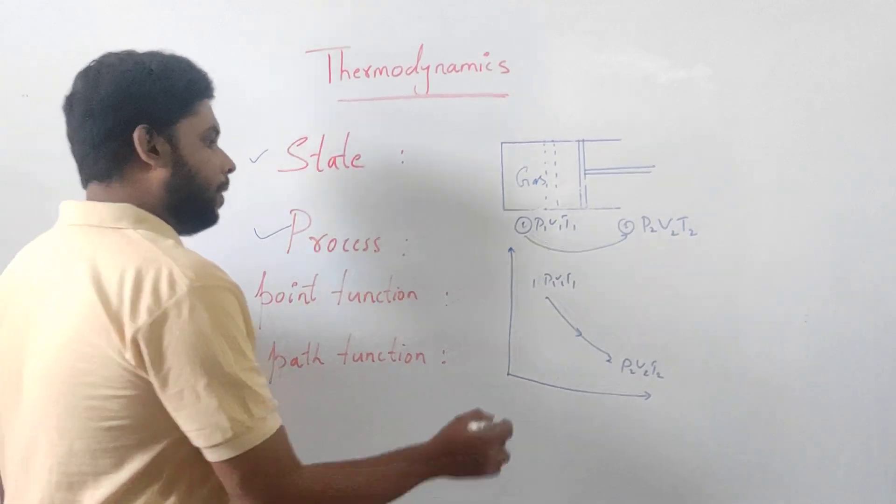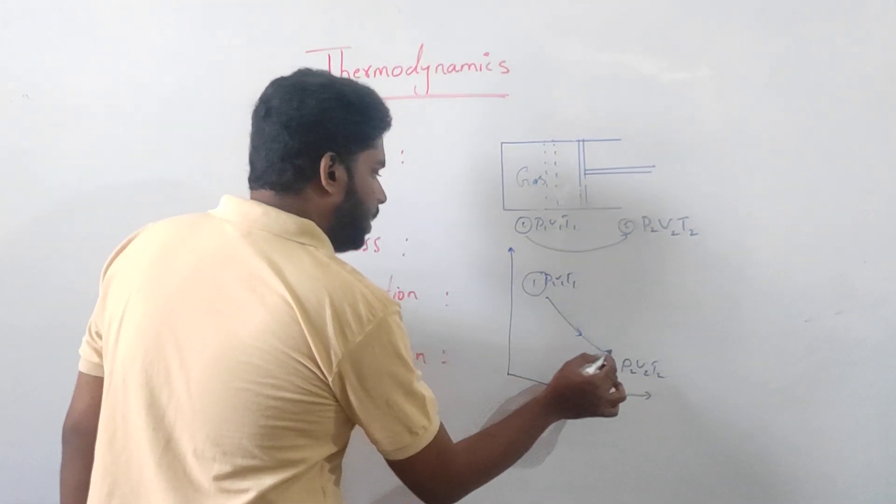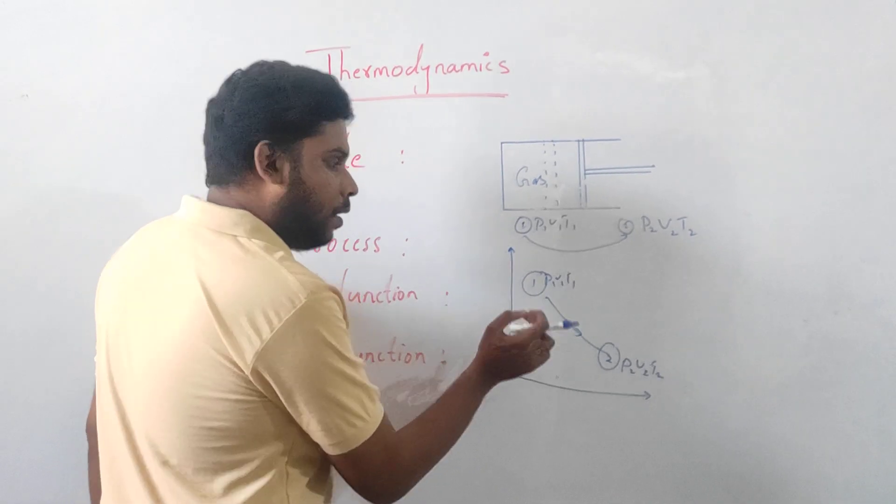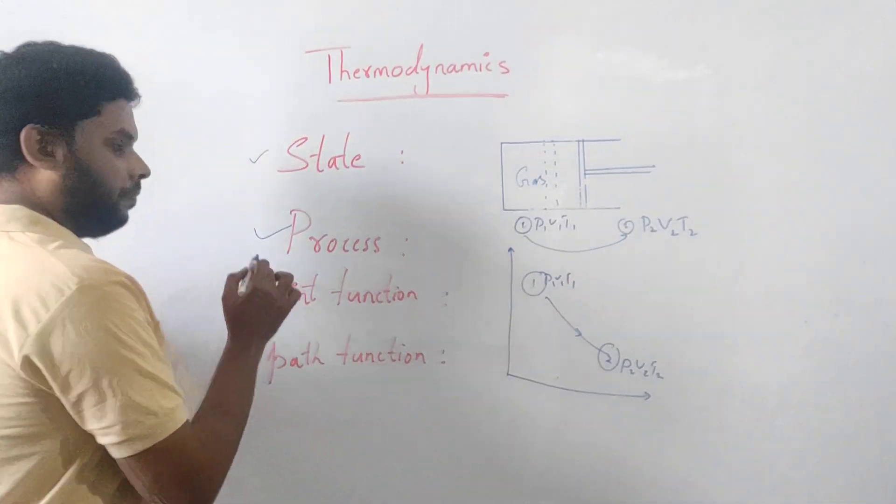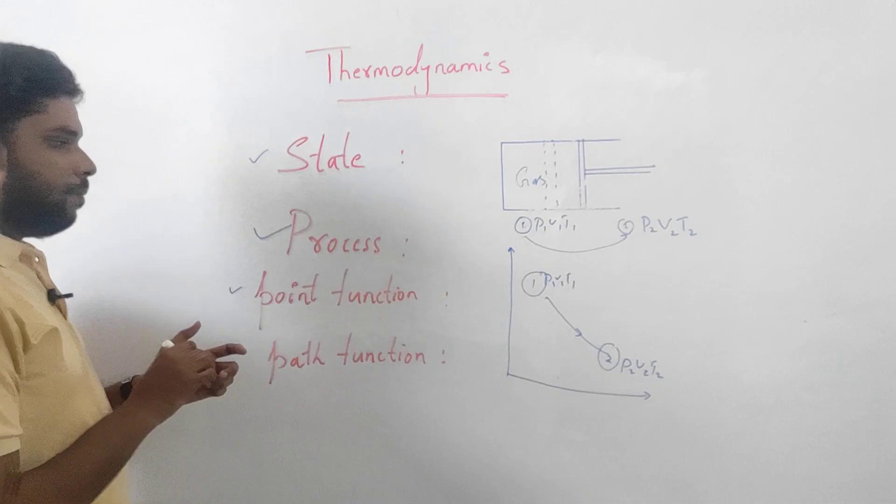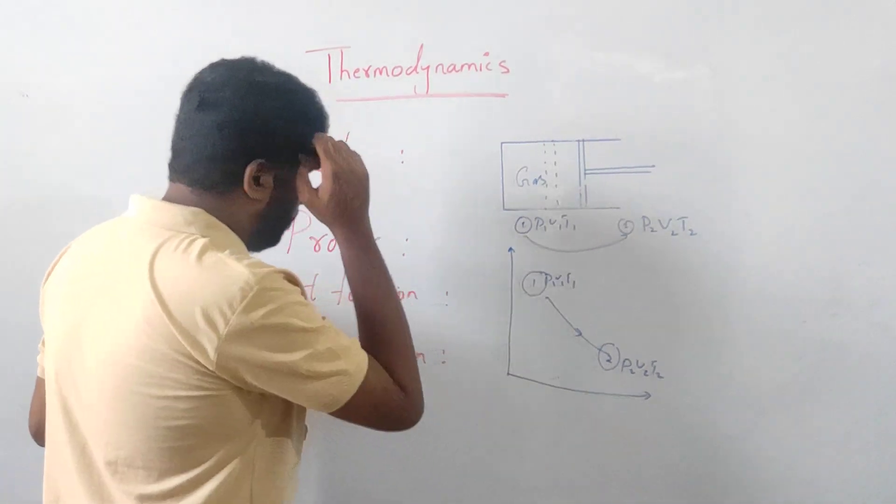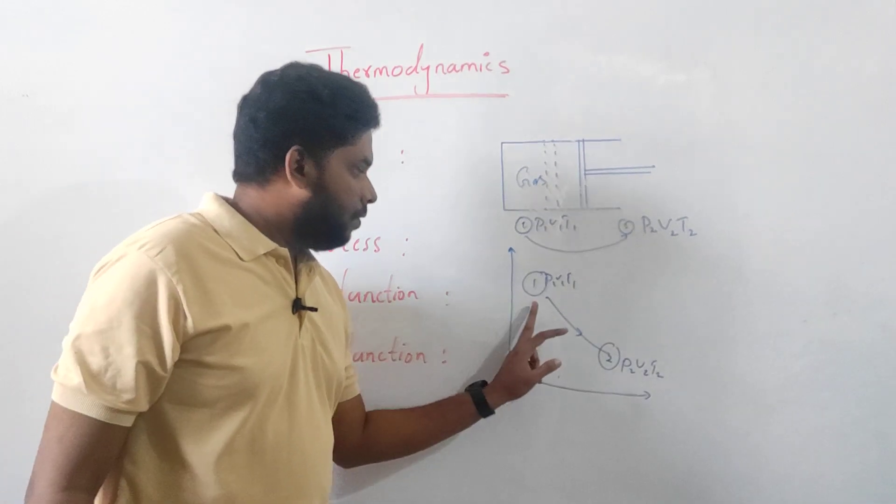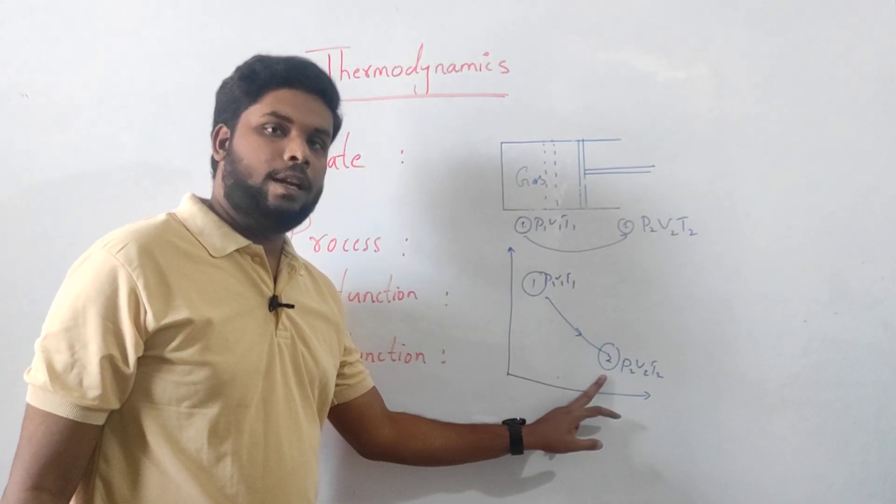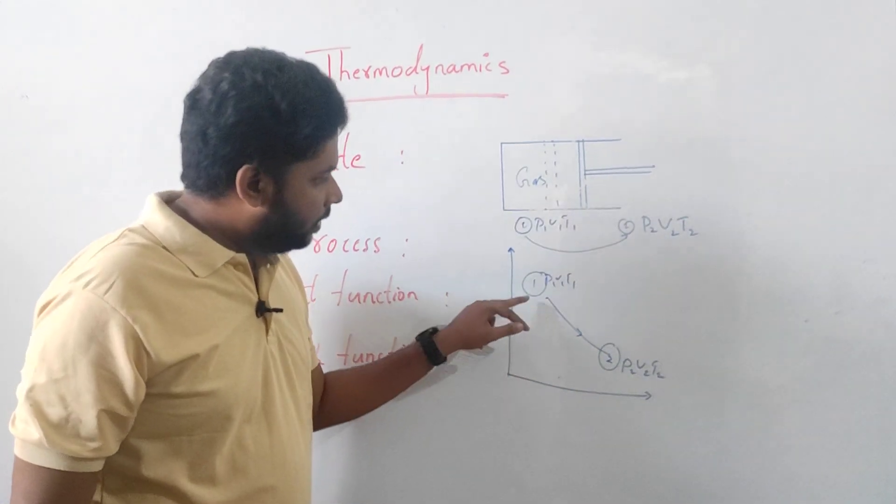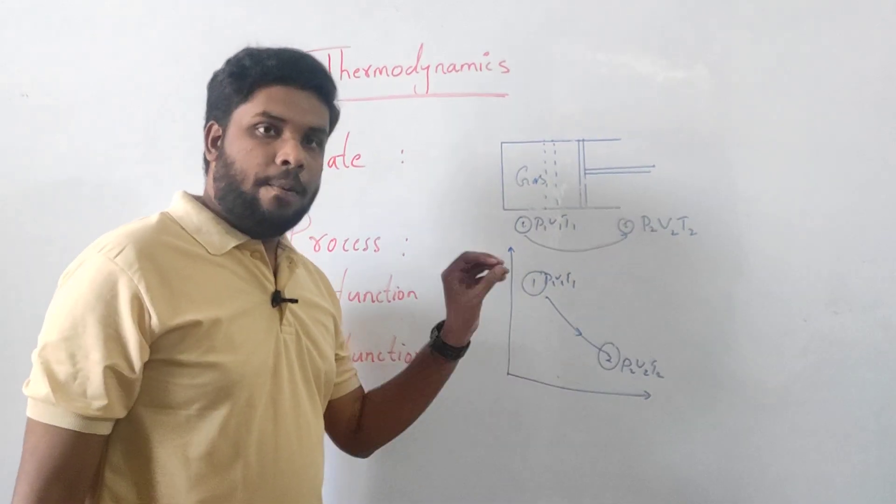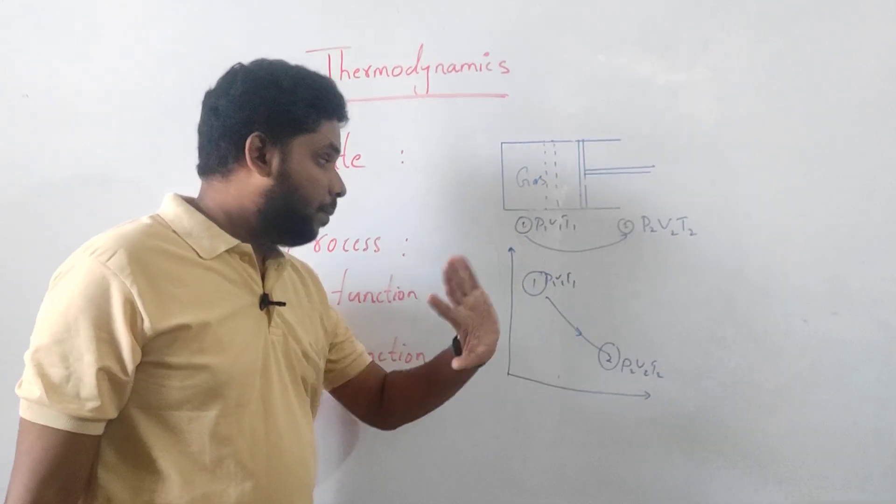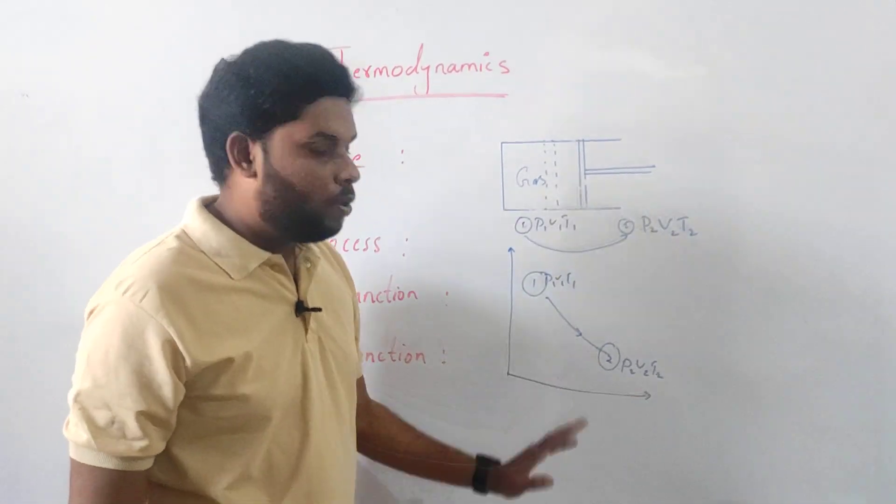The point function is that which represents the condition - final or initial point - which is the point function. In graph, we represent a point as a point function. This means that the system represents initial and final state only, rather than how the system has gone from 1 to 2. The point function depends on state 1 and state 2.